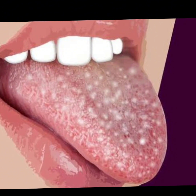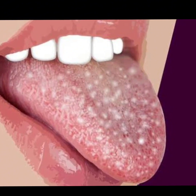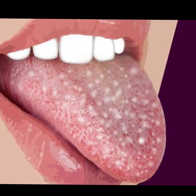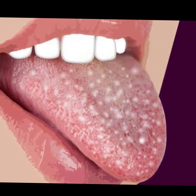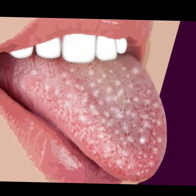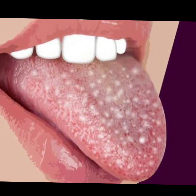Use of clove oil: a mouthwash can be prepared from clove oil, as it has pain-relieving and bactericidal properties. This is done by soaking a teaspoon of clove powder in a cup of water for five minutes, then rinsing the mouth with the filtered liquid.